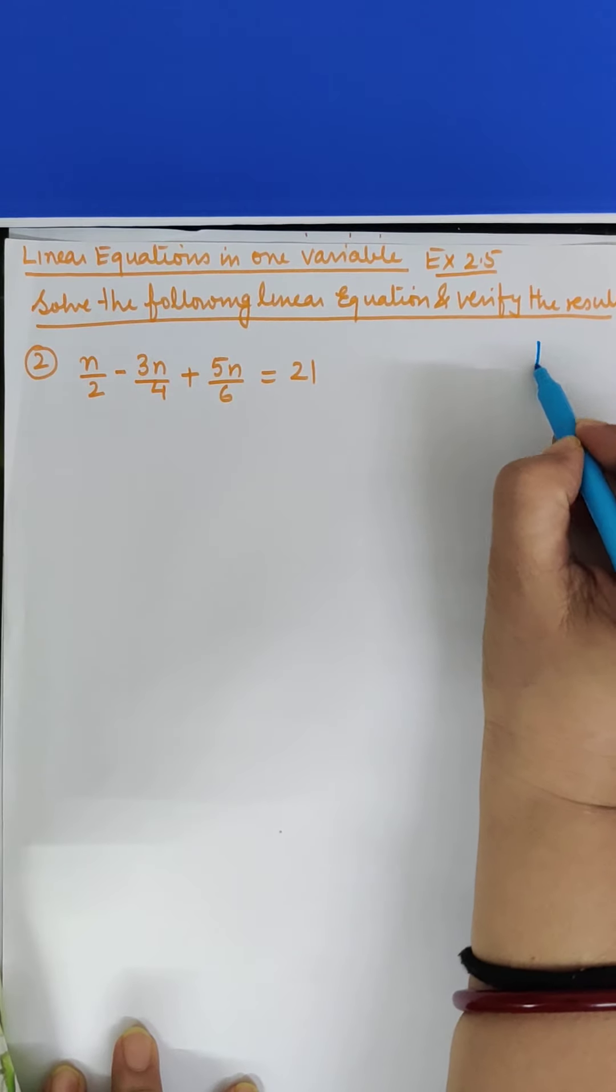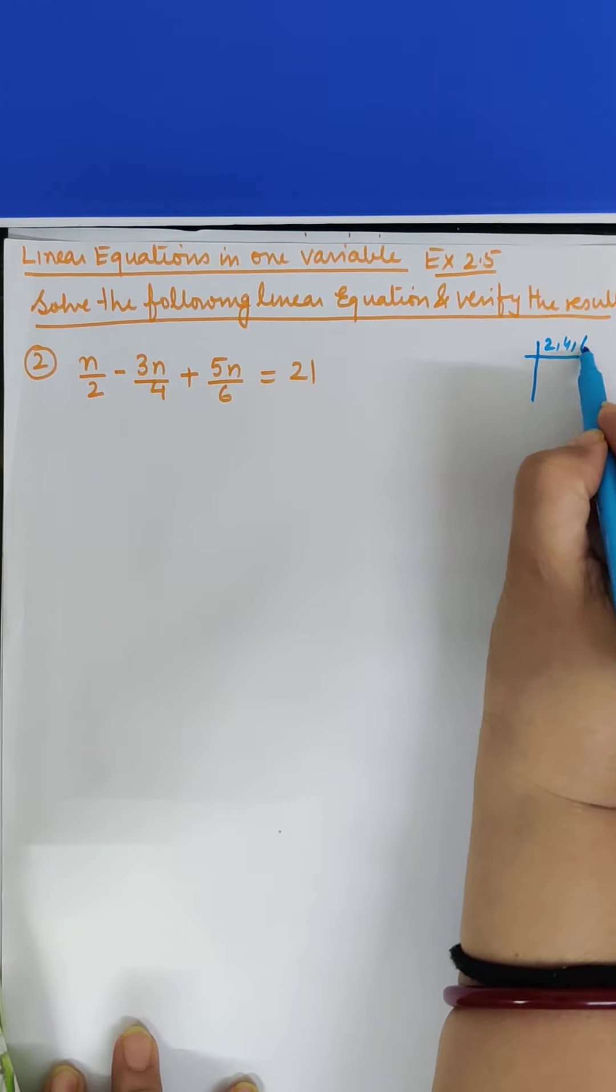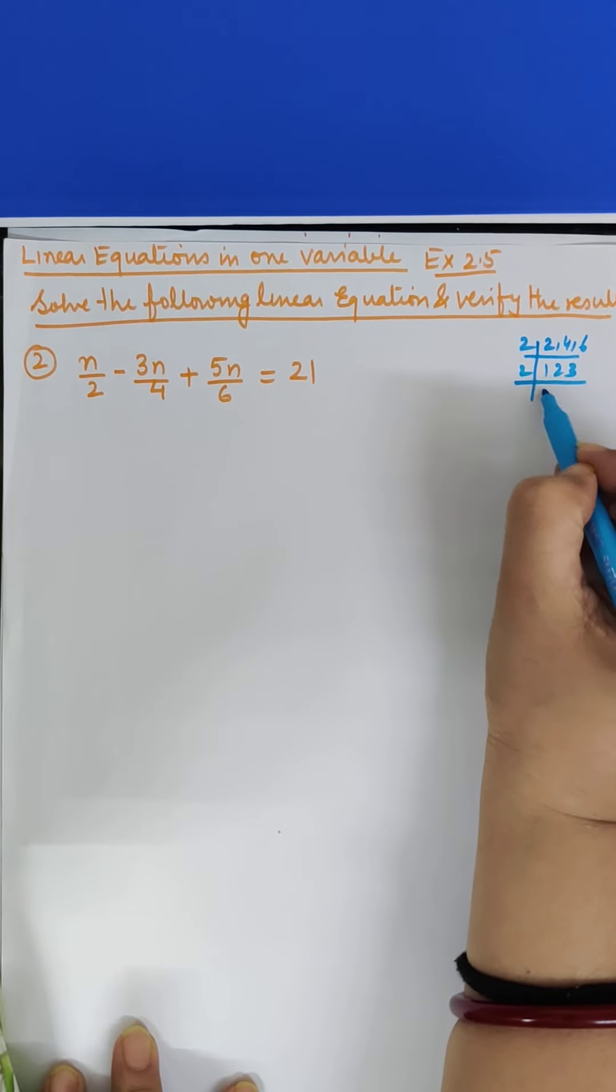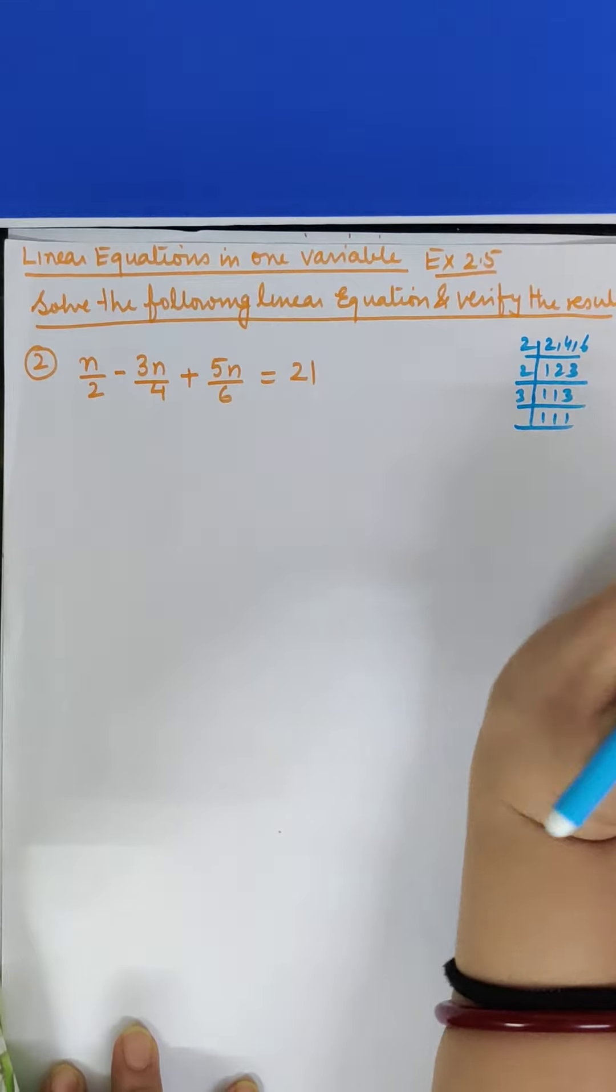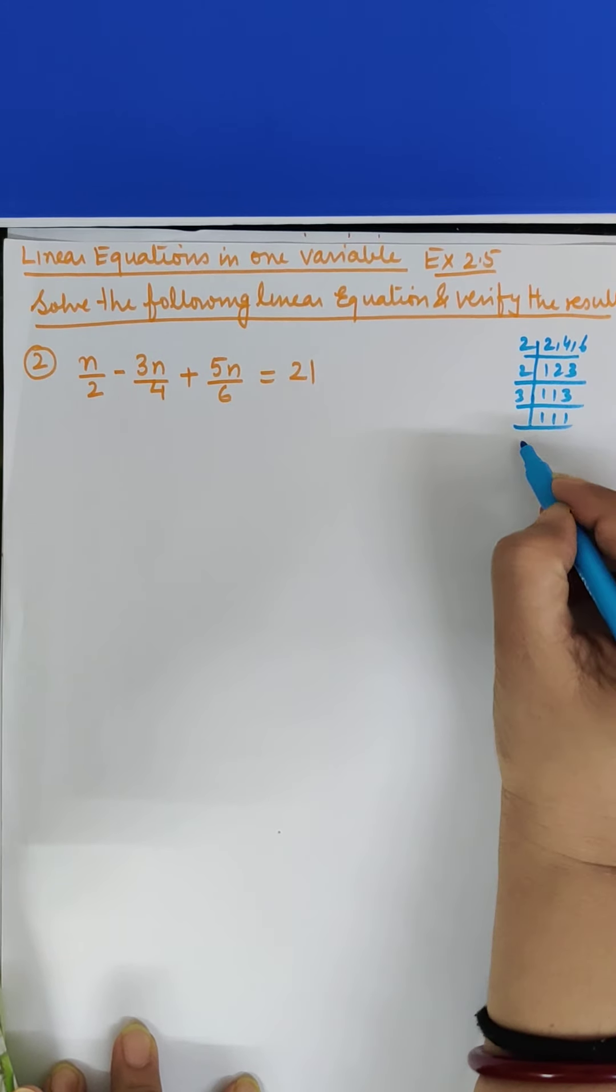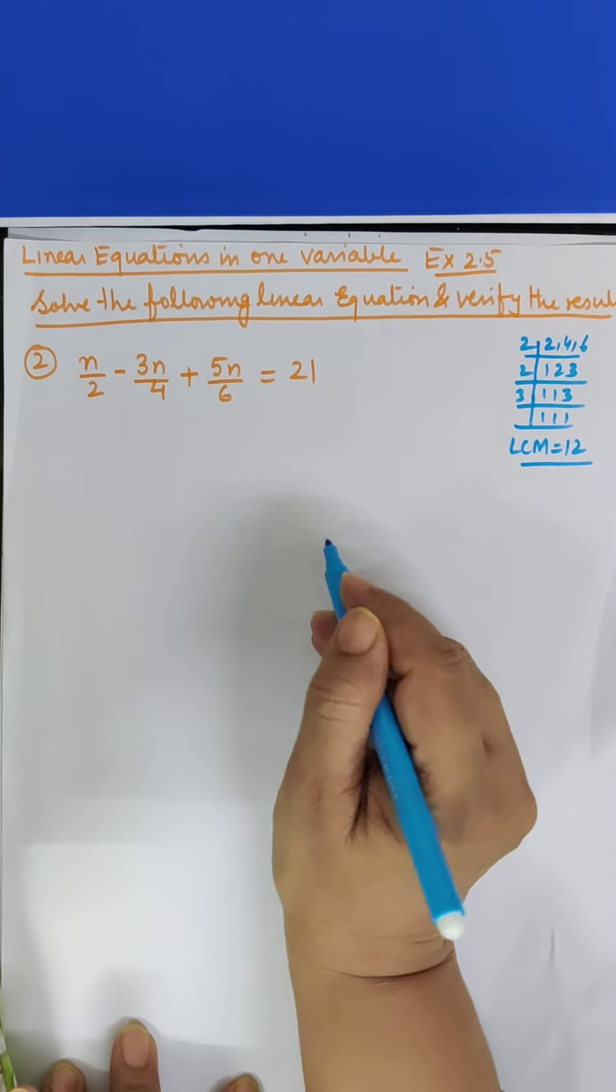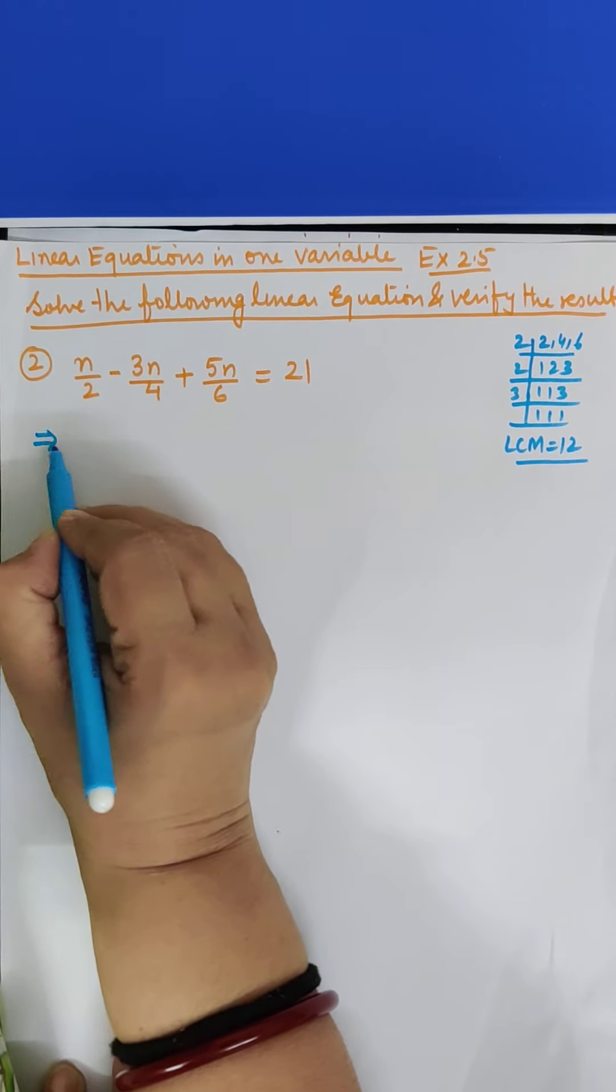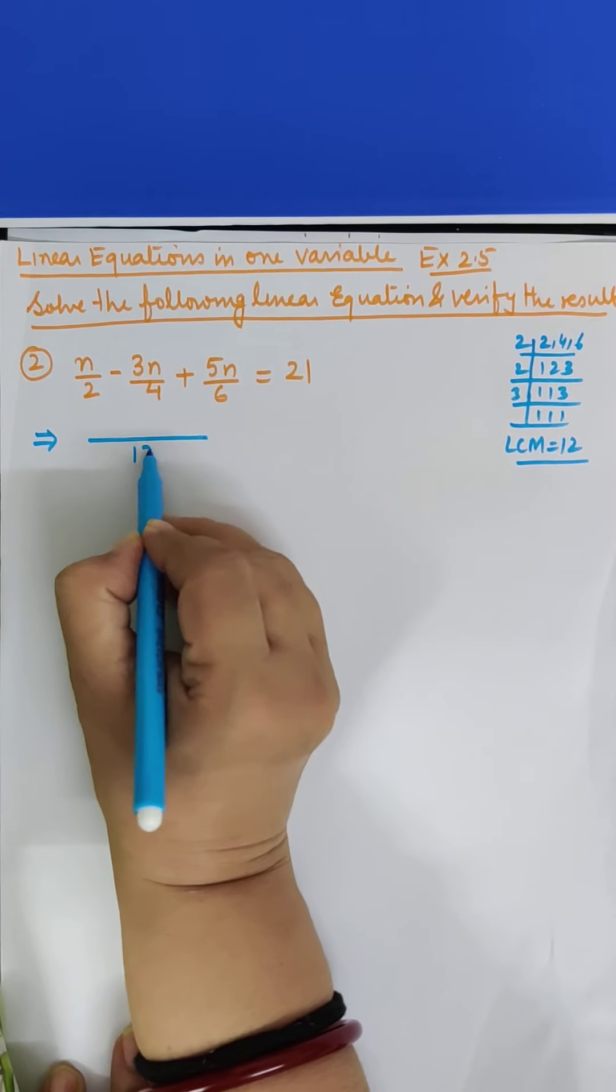Let me work this out to the side. 12 comes from 2, 4 and 6. 2, 1 is 2, 2, 2 is 4, 2, 3 is 6. 2, 1 is 2 and this is 3. Okay? 2, 2 is 4, 3 is 12. 12 is the LCM. This implies that LCM is 12.